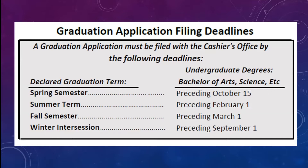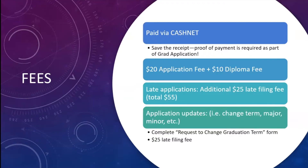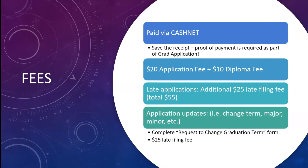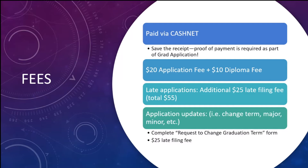Otherwise, you have to pay a late fee, which we'll talk about later. Speaking of fees, you pay everything via CashNet. Once you pay, they're going to send you a receipt — save that receipt because proof of payment is part of your application that you submit to the grad office. The fees are: $20 for the application fee itself, and $10 for the diploma — that nice slip of paper you get in the mail about one month after you graduate. So $20 plus $10 equals $30 total — that is your graduation application total fee.